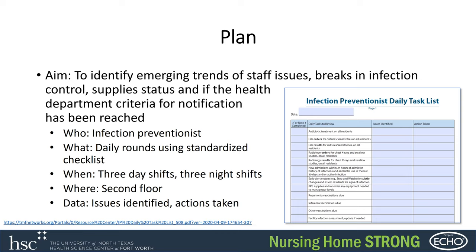In this example, our team is trying to be more proactive about identifying emerging trends that impact infection control — things like staffing issues, supply amounts, or health department notifications. To do this, they found a tool to help them do environmental rounds. This tool provides a checklist of areas to review, and having a standardized approach is important.